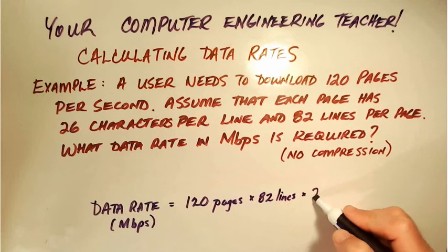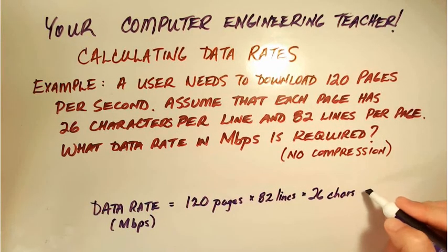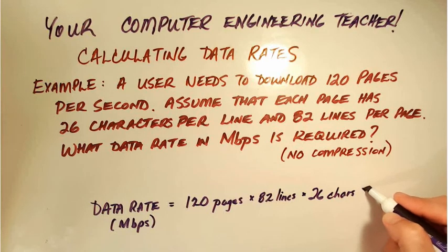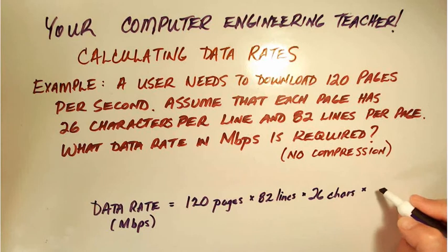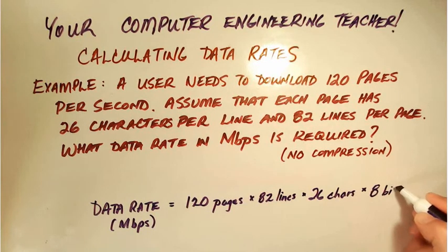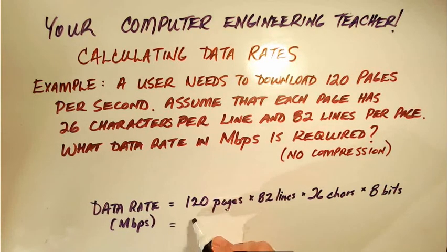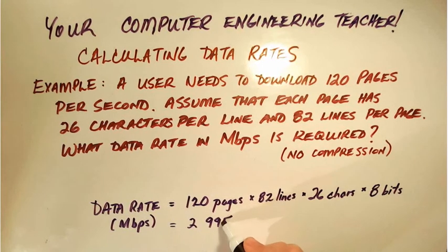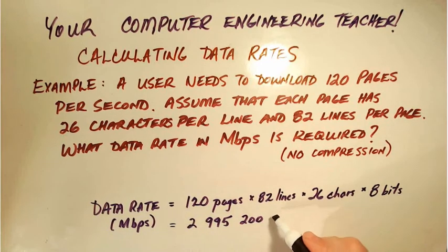And what we need to remember is when we're transmitting data, each character, each keystroke, takes eight bits of information to transfer. So for every character, we need eight bits, so we're going to multiply by eight. Take our calculator and multiply this out, and it comes to 2,995,200. So that is the number of bits.